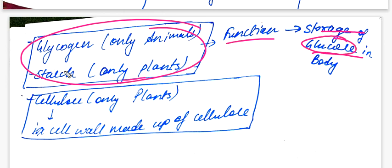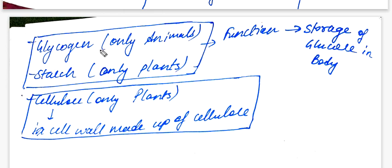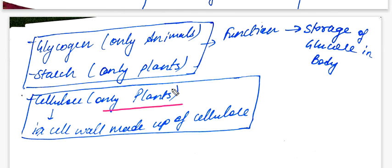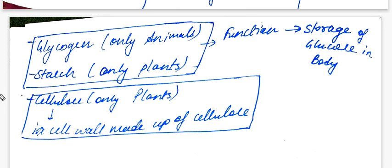Starch is stored in plants and glycogen is stored in the animal body. Plants have cell walls made of cellulose, which is a polymer of glucose. So the cell wall is made of cellulose — these are all examples of polysaccharides: glycogen, starch, and cellulose.